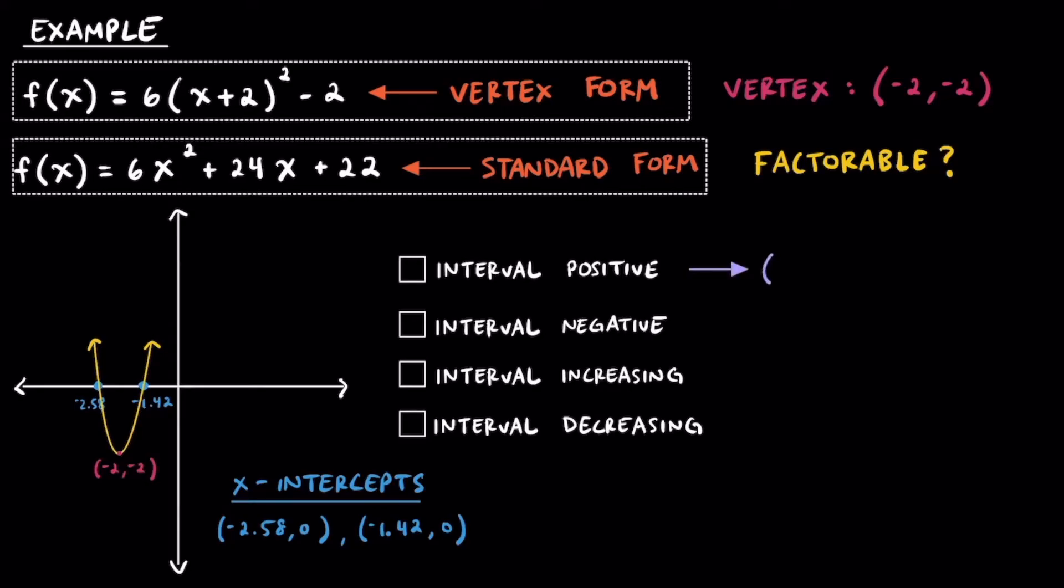This quadratic function is positive on the interval of negative infinity to -2.58 and also -1.42 to positive infinity. Here's where that first interval is referring to, and here's where the second part is referring to. For the intervals that are positive, we're really just looking for where the function is above the x-axis, in the positive y values.